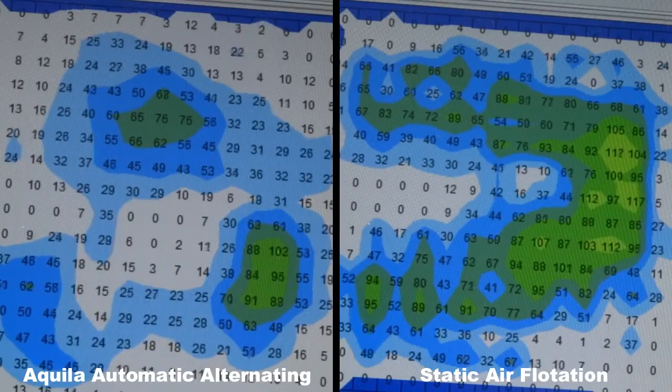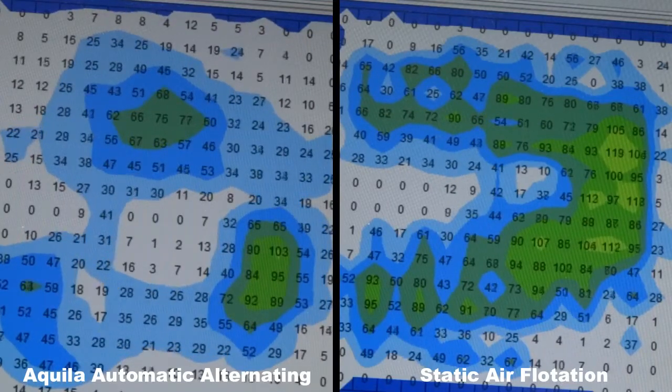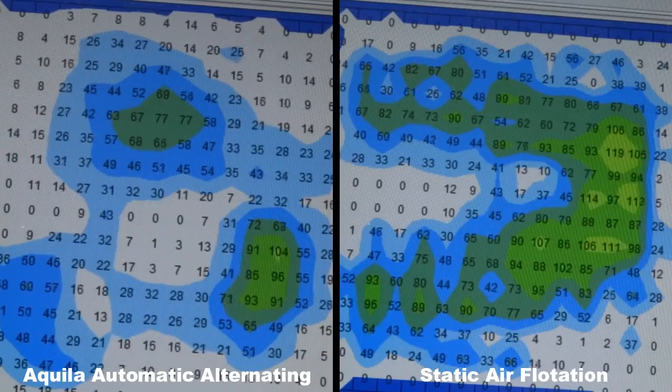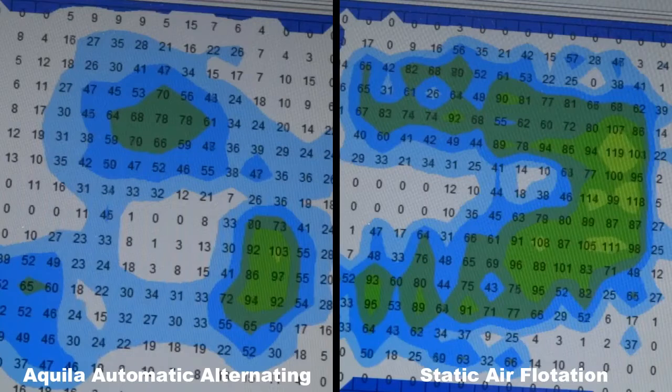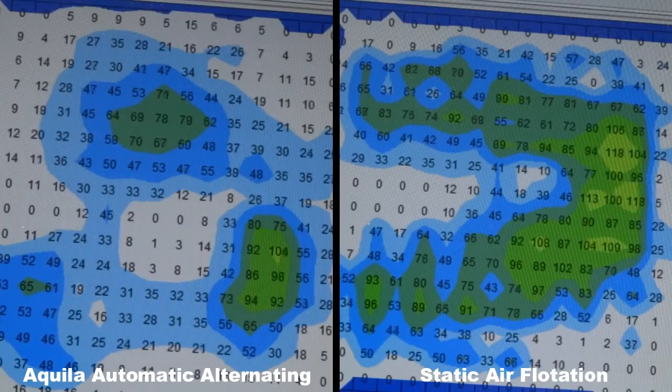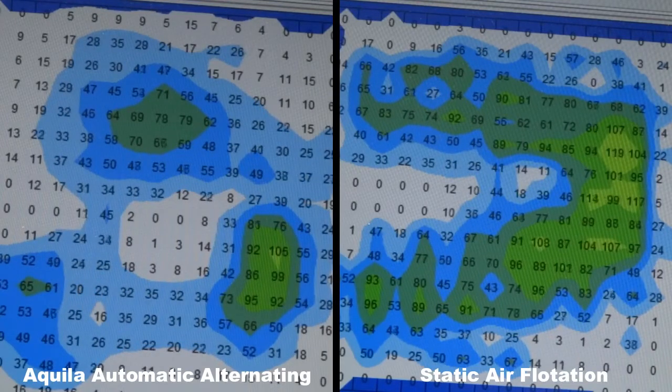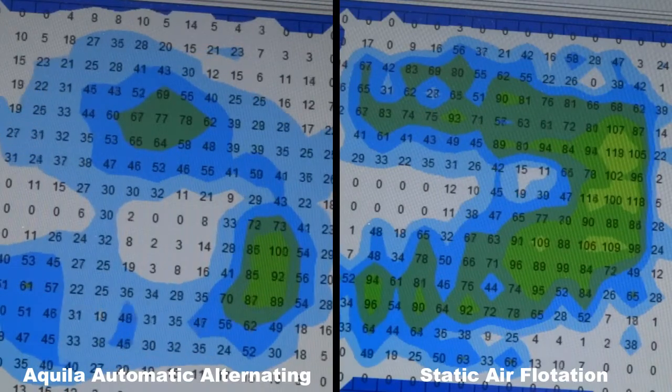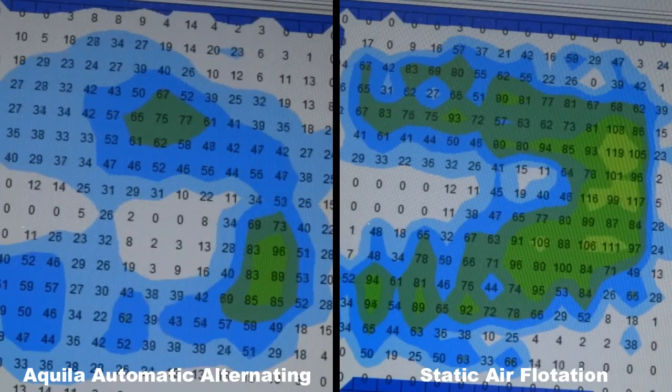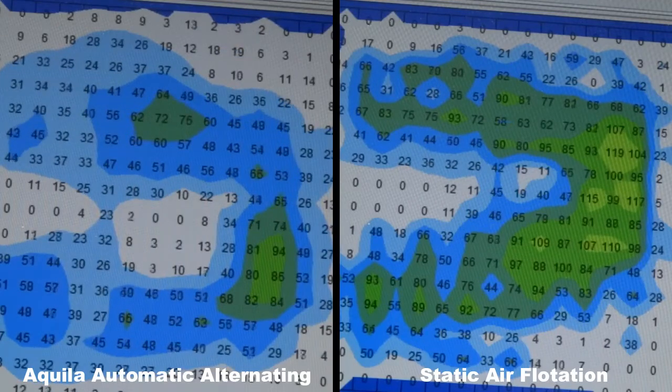The pressure mapping system we are using today is a calibrated FSA interface pressure mapping system. It is crucial that your system be properly calibrated or your findings will be inaccurate. Over the entire duration of this video, the pressure mapping system is running and capturing even the slightest change in the interface pressures that the cushions create on their own.